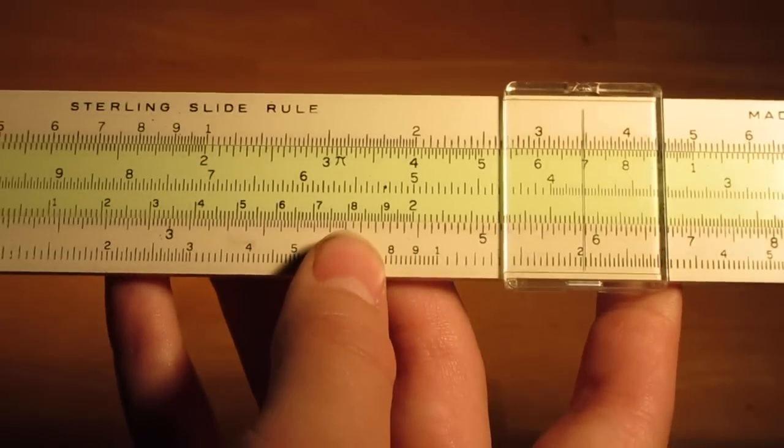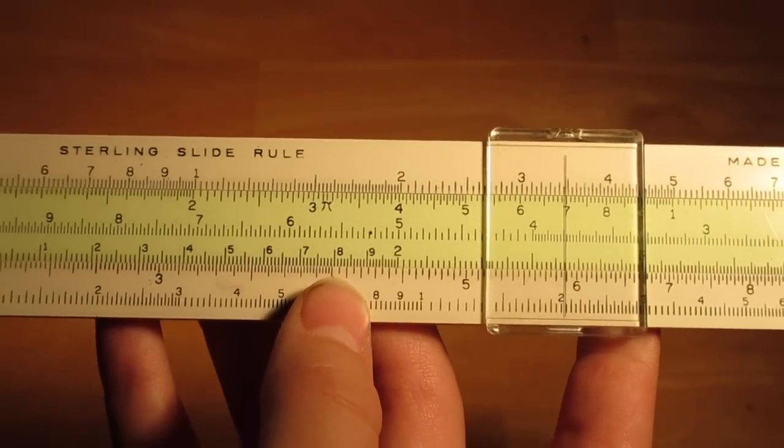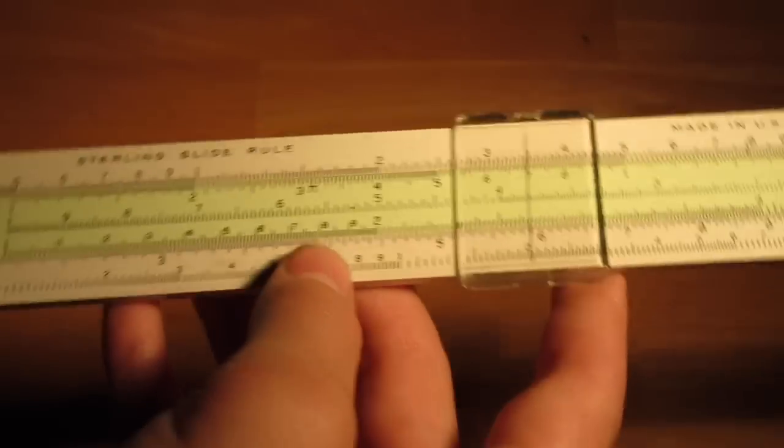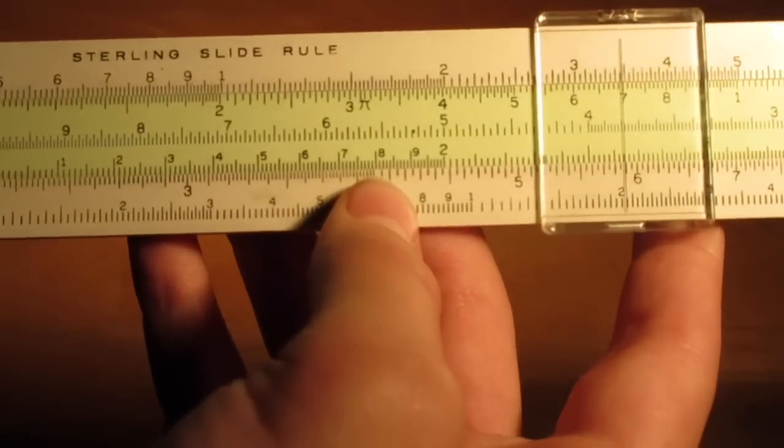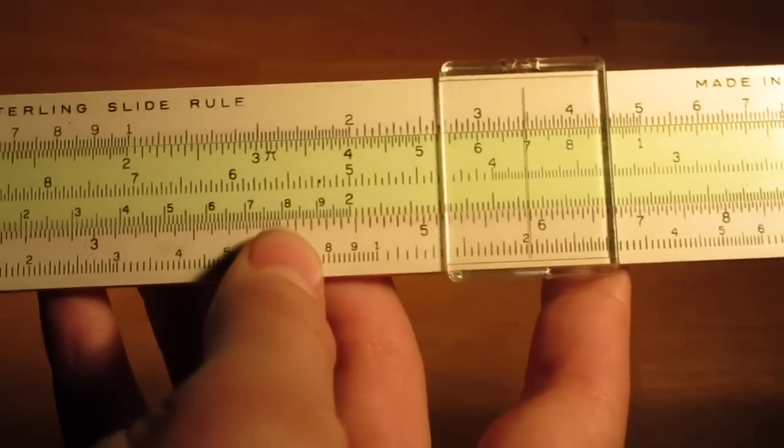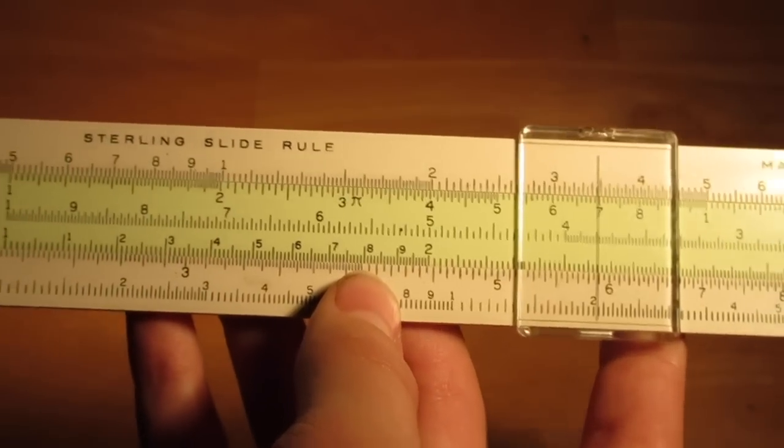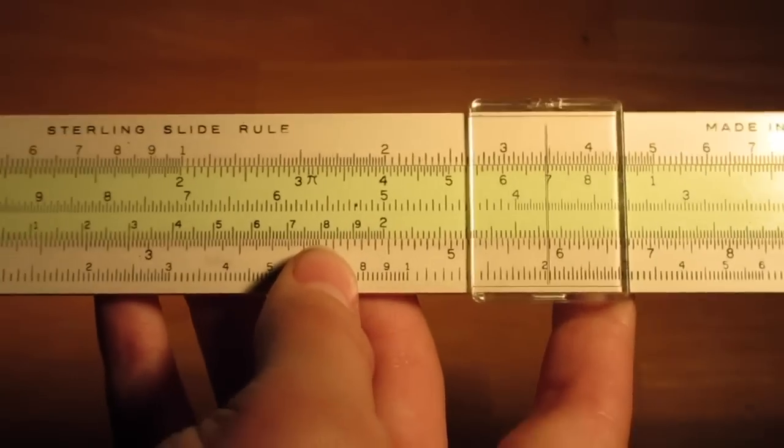However, if you're using larger numbers, such as the thousands, these could also represent a thousand, or a million, or 10,000, or any number like that. You just need to know where to place your decimal so that your values are accurate.